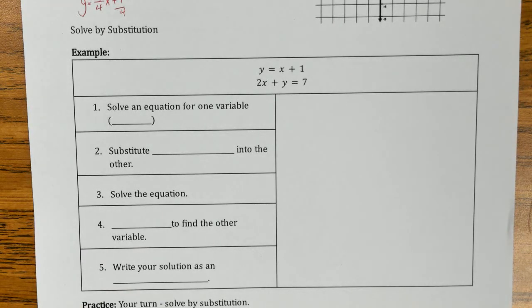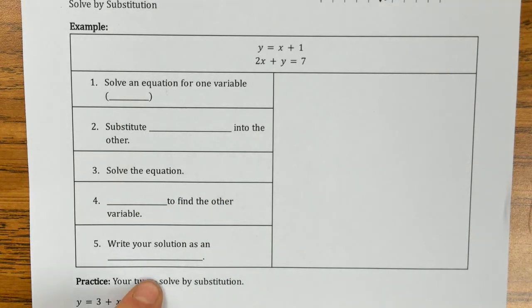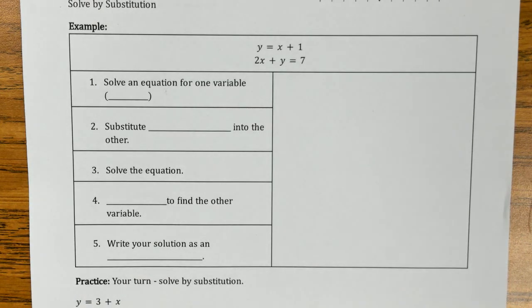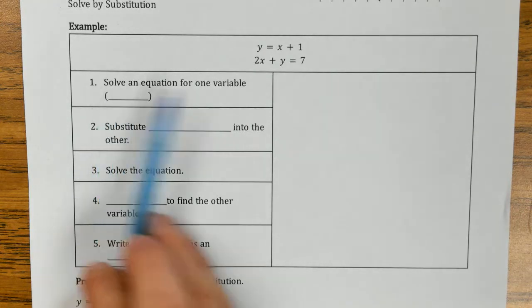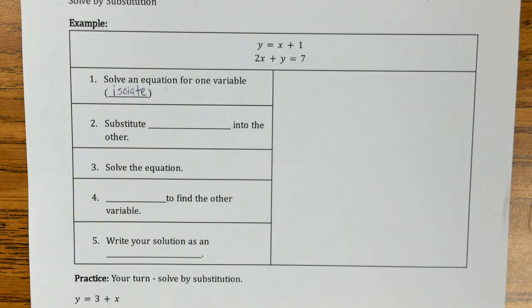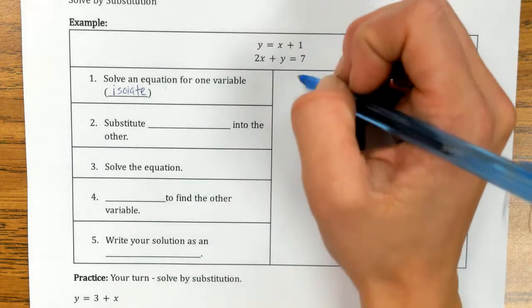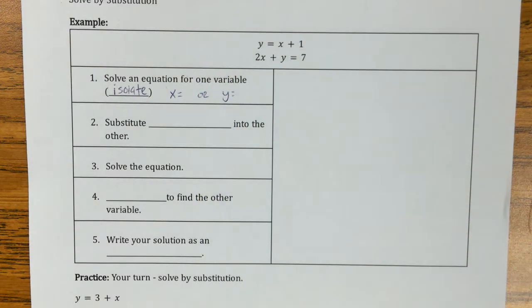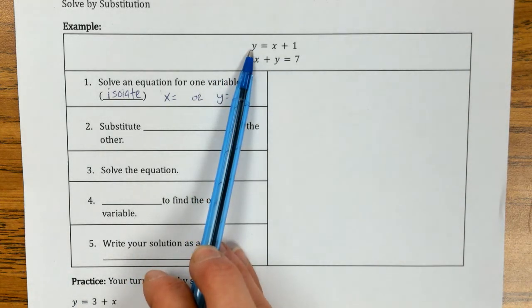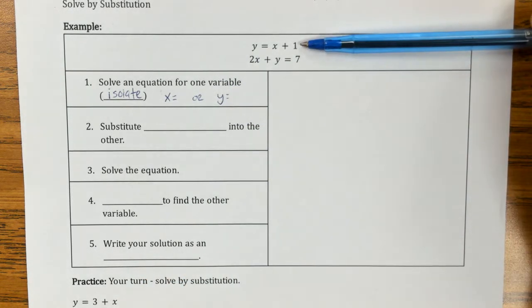We are going to do an example together and fill out these steps on the right-hand side. To solve this system by substitution, the first step is to solve an equation for one variable — or we know this as isolating, trying to get a variable by itself. I'm looking for anything that has x equals or y equals. I actually see one that's already solved for. When you're looking for a variable isolated, they don't both have to be isolated, just one. So this first equation is already done for us; we don't have to do step one.